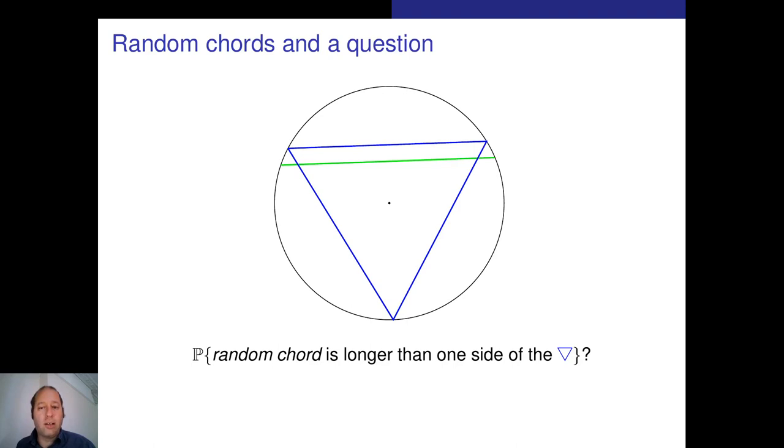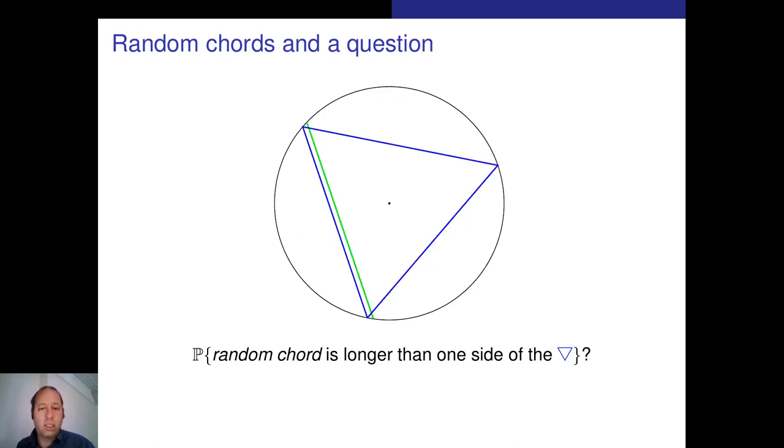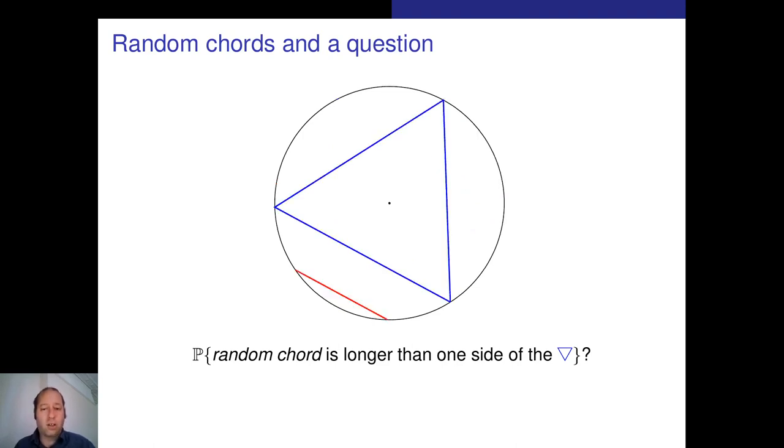So here it is clearly longer, here it's shorter, this tiny thing here happens to be very short, so it's shorter. In this case it's longer, in this case it's shorter, and then longer, and shorter, and shorter again, you get the point. Question: what is the probability of this happening, so that the random chord is actually longer than one side?